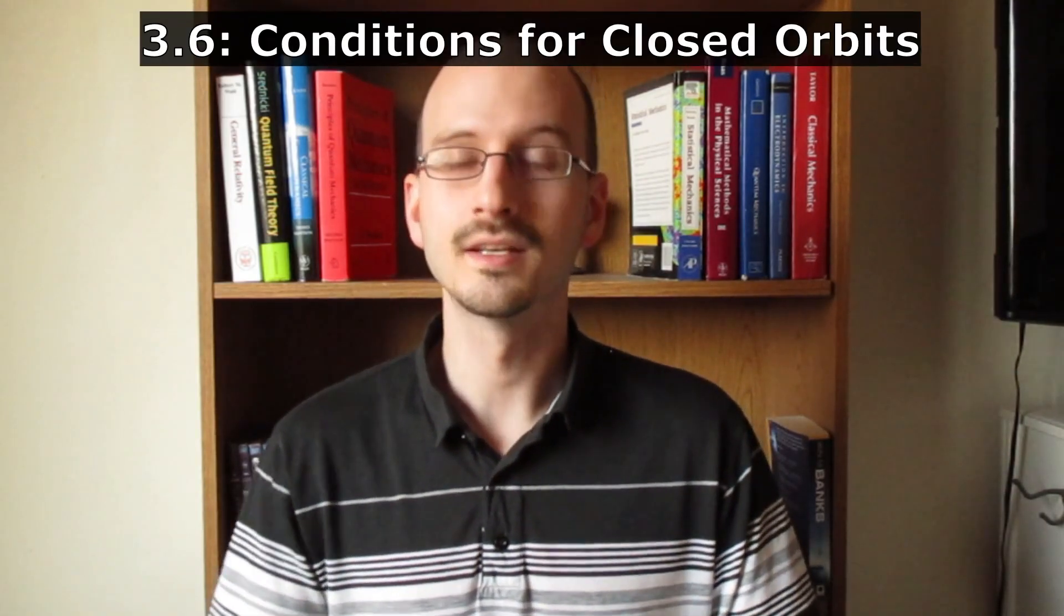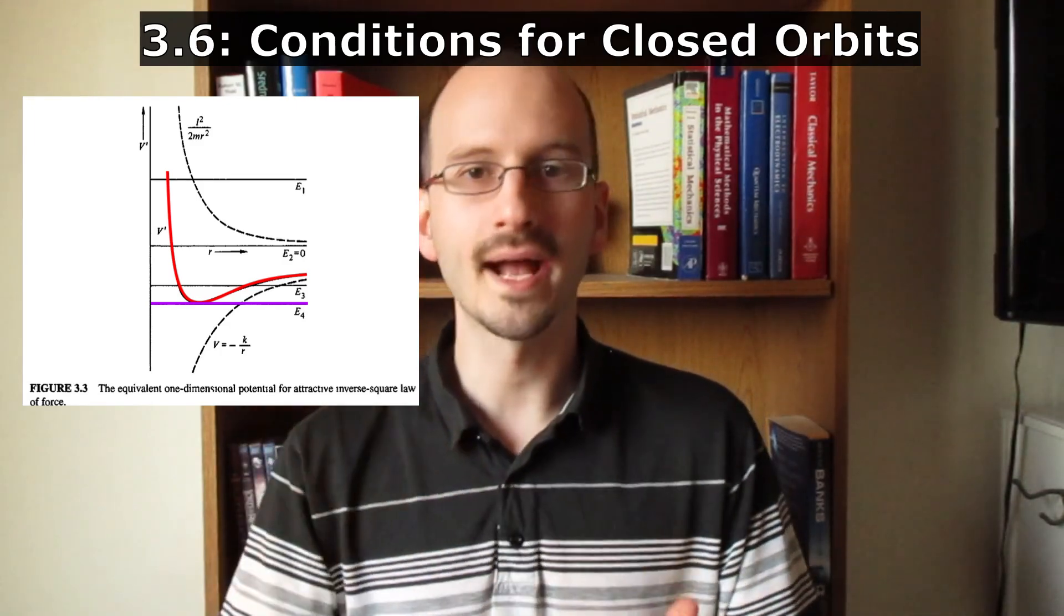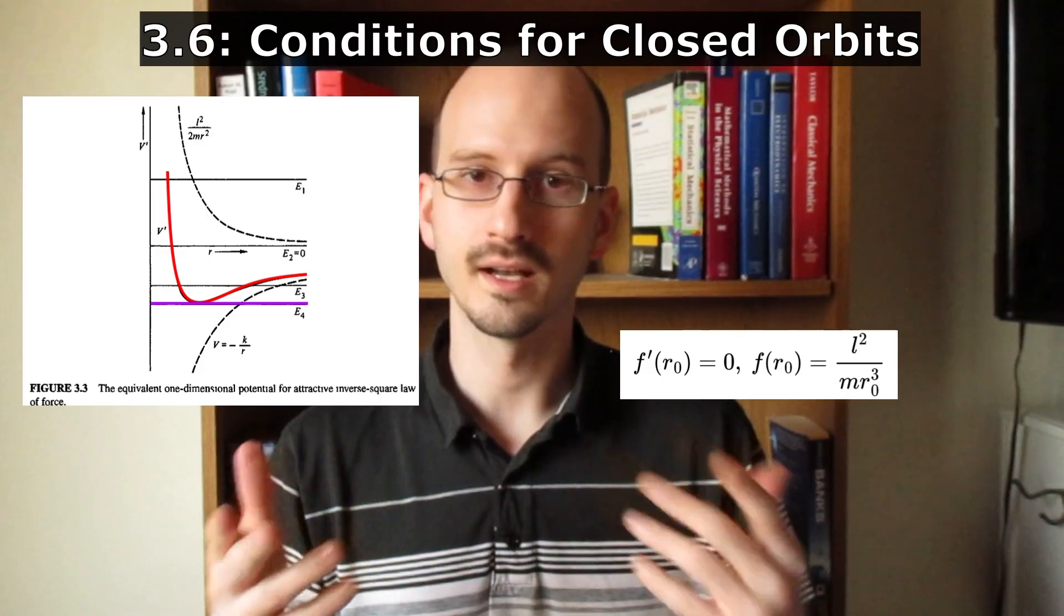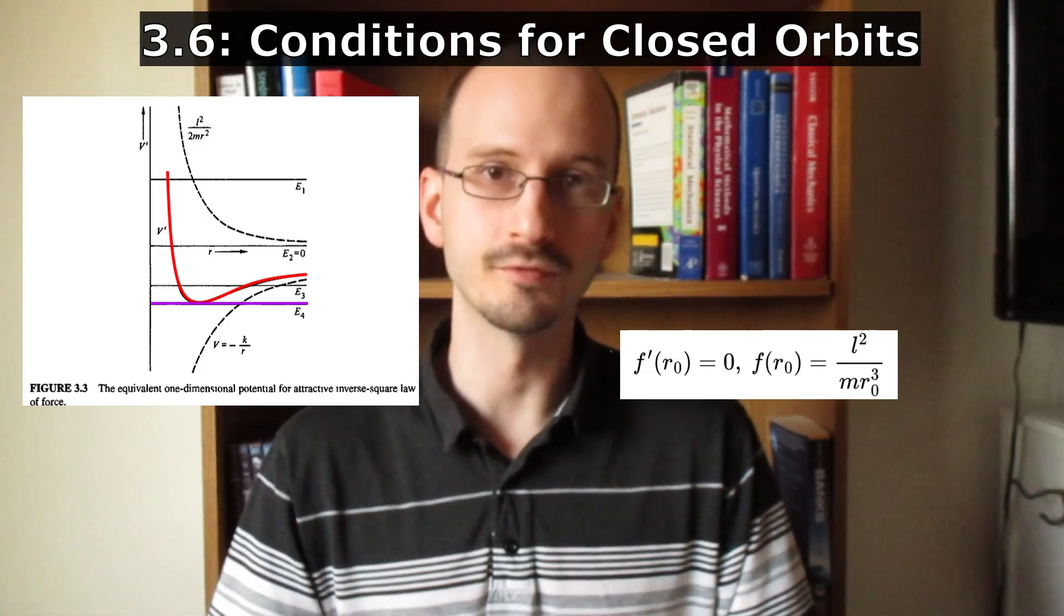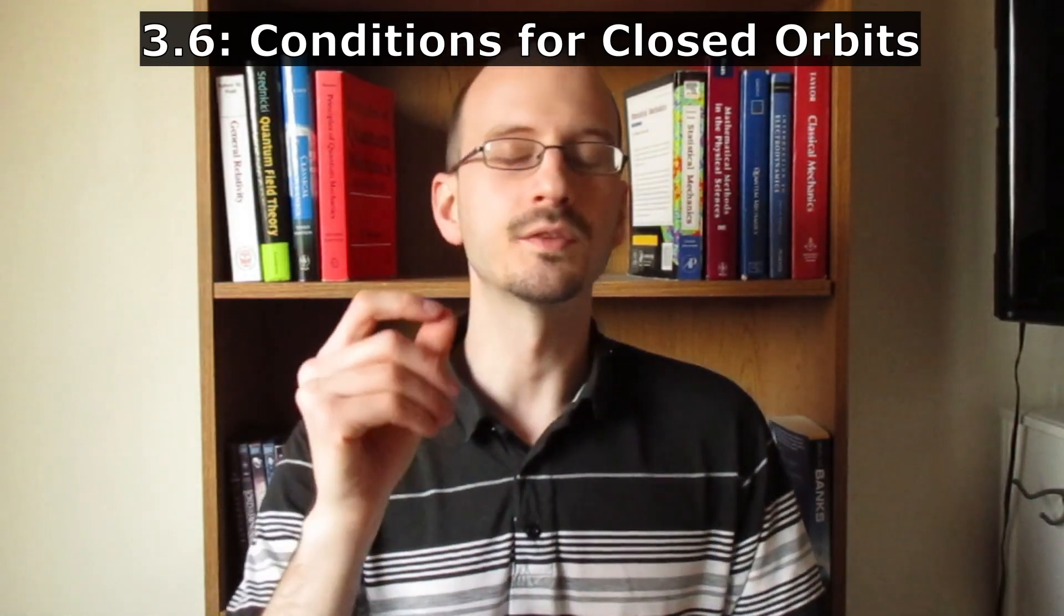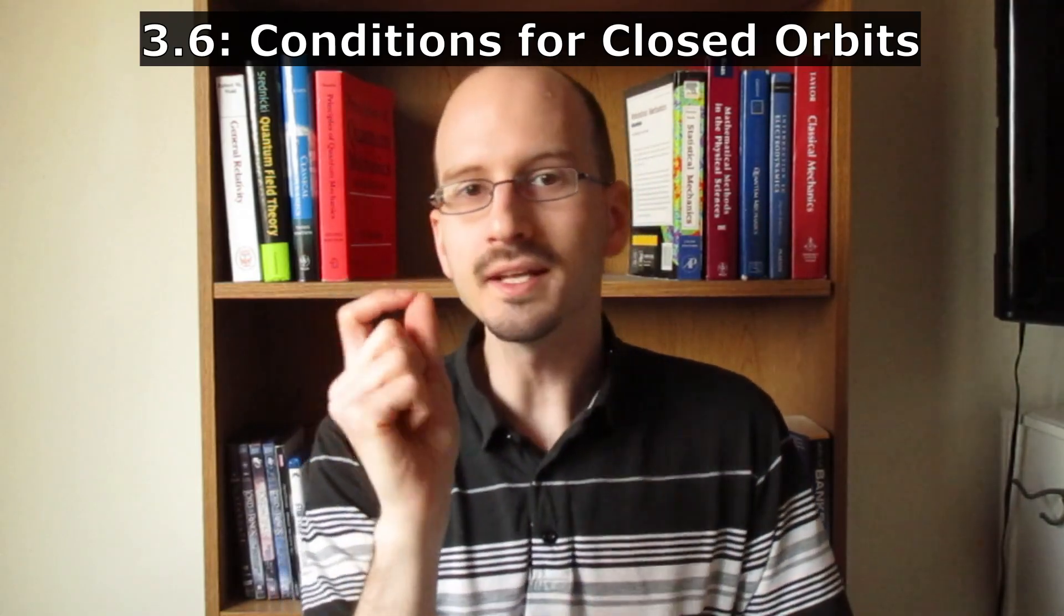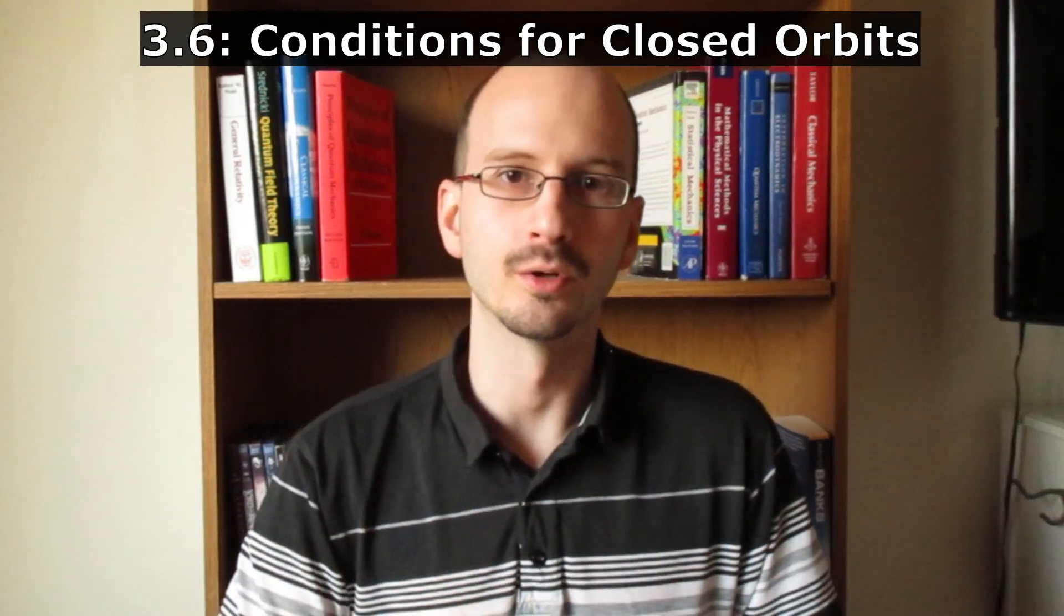Section 3.6, conditions for closed orbits. We already talked about how a circular orbit is when the energy is equal to a minimum or maximum in the effective potential. This occurs when the central force is attractive and exactly cancels out the centrifugal force. This obviously can't happen for a repulsive force because the centrifugal force is repulsive.